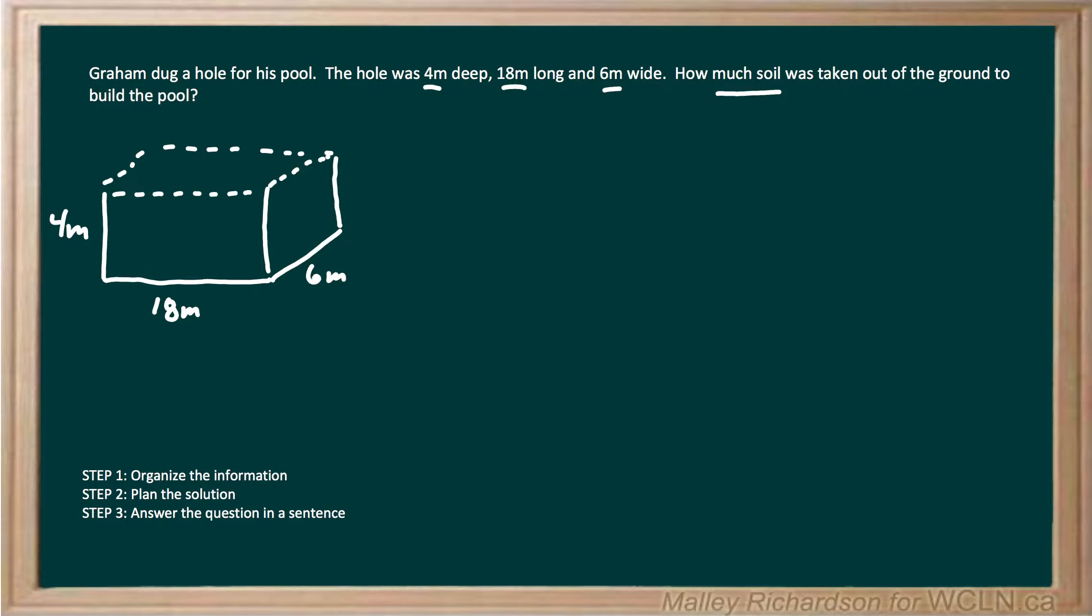Now we need to find the volume of this hole. We know the volume is length times width times height. Let's fill in what we know. Our length is 18 meters, our width is 6 meters, and our height, which is also known as the depth, is 4 meters.